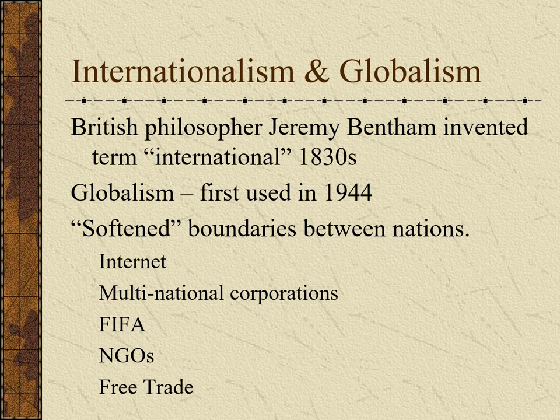Examples of globalism and internationalism in our world today — people complain about globalists online, but they're doing it on the internet, which only works globally because so many servers are in Russia, China, and Canada. They're using Facebook and Google to complain about globalism — international corporations — without realizing how much they benefit. Things like the internet, multinational corporations like Amazon, Google, and Facebook — as much as we complain about them, we're all using them.